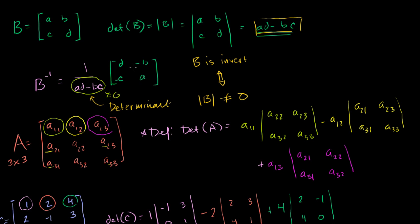So far, we've been able to define the determinant for a 2 by 2 matrix. This is our definition right here: AD minus BC.